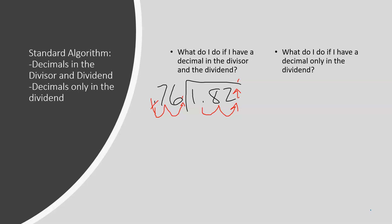Now we're ready to divide. Seventy-six will go into one zero times, it will go into eight zero times, so seventy-six will go into one hundred and eighty-two twice. Two times seventy-six is one fifty-two, with a difference of thirty. Now we'll need to add a zero because we have nothing to bring down, so that we can finish dividing. Seventy-six will go into three hundred three times. Three times seventy-six is 228.